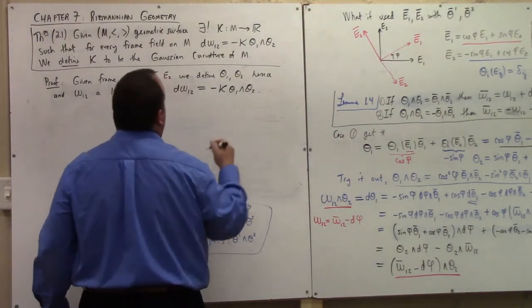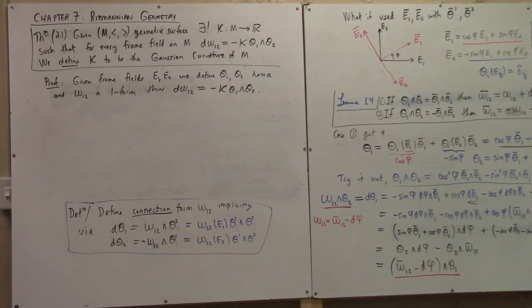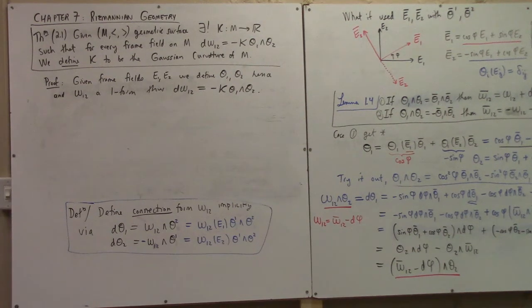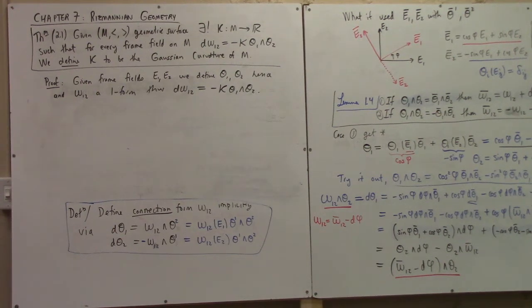From the basic calculus of differential forms, D omega 1,2 is a two-form and theta 1 wedge theta 2 is a two-form — they must be proportional. Let's call that proportionality minus K. In that respect, this theorem isn't particularly deep. It's just saying there's one two-form, so if you have a one-form and you can exterior differentiate it, it must be proportional to the existing two-form. Of course, K could be zero.